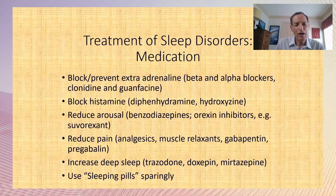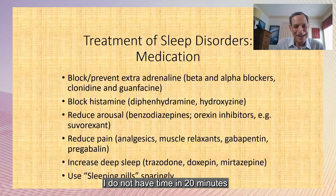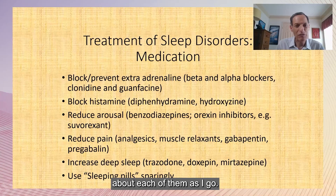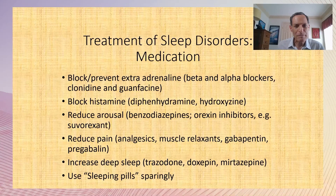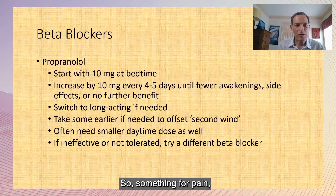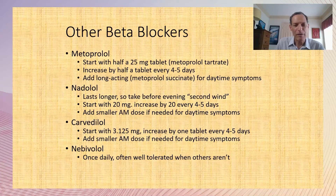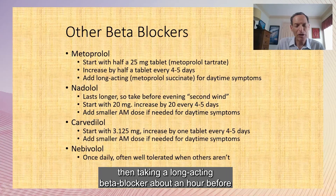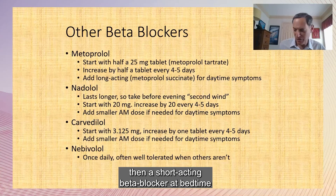Regarding medications — most people are going to need some combination: something for pain, something for adrenaline, something to increase deep sleep. Beta blockers are useful if too much adrenaline is keeping you awake. If you get a second wind in the late evening, taking a long-acting beta blocker about an hour before that second wind — usually around nine o'clock — is helpful. If not, a short-acting beta blocker at bedtime may be sufficient.